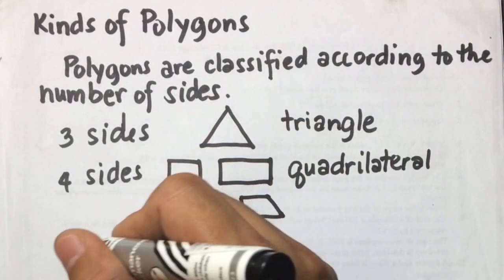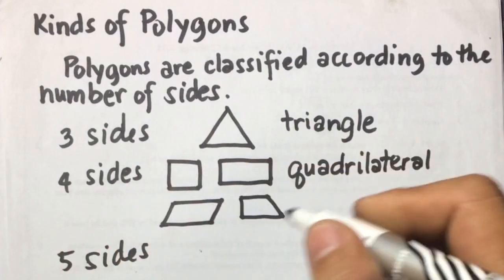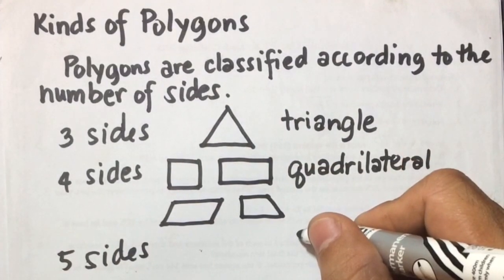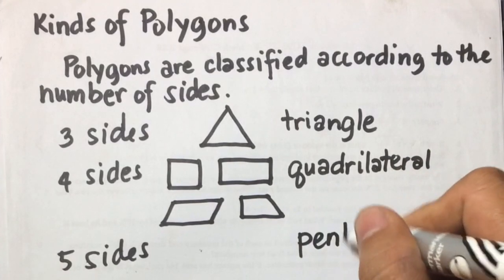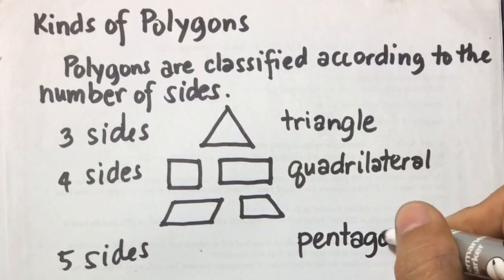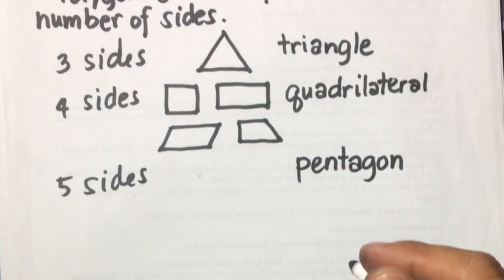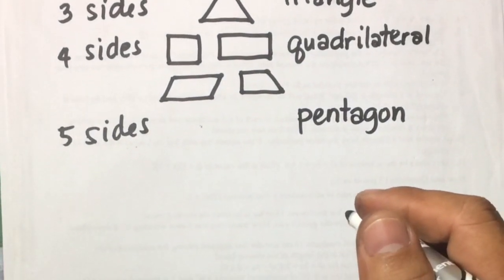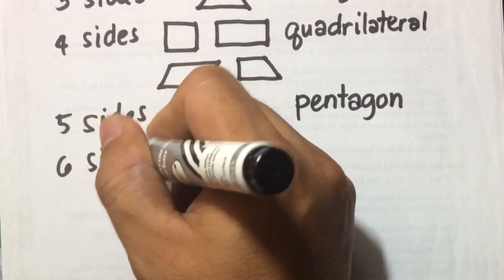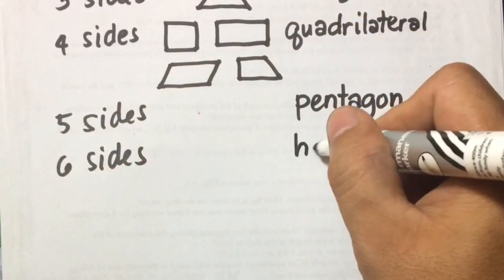A polygon with five sides we're going to name as pentagon. So five sides is pentagon. Then if we're going to have six sides, you can name that one as hexagon.